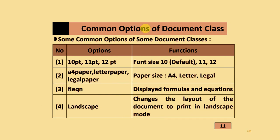Common options of document classes include: font size options of 10pt, 11pt, or 12pt — by default the font size is 10pt; paper size options such as a4paper, letterpaper, or legalpaper; options for frequently displayed formulas and equations; and the landscape option, which changes the layout of the document to print in landscape mode.